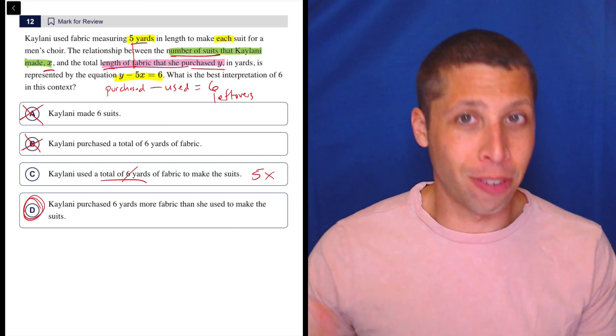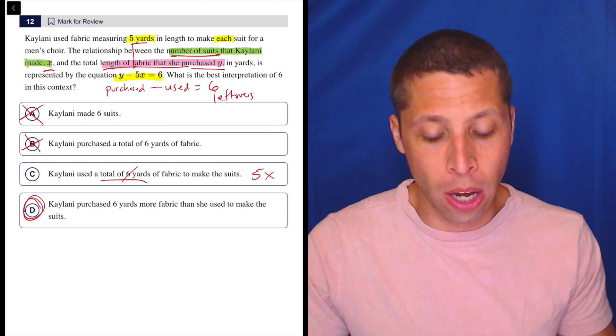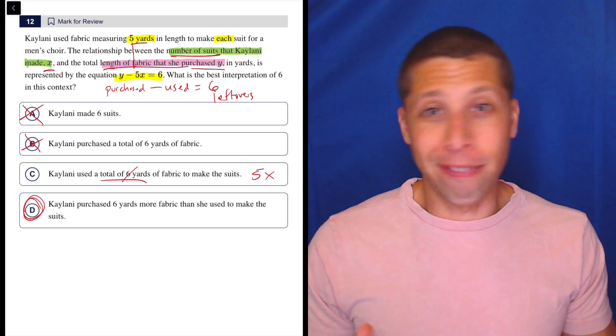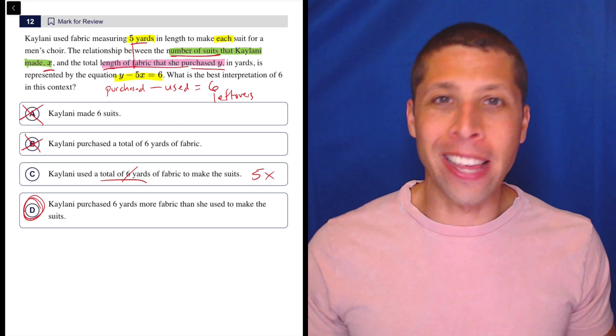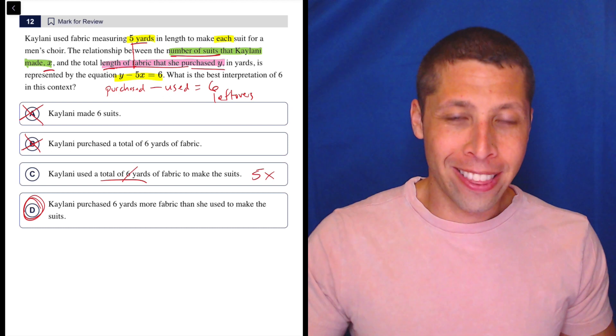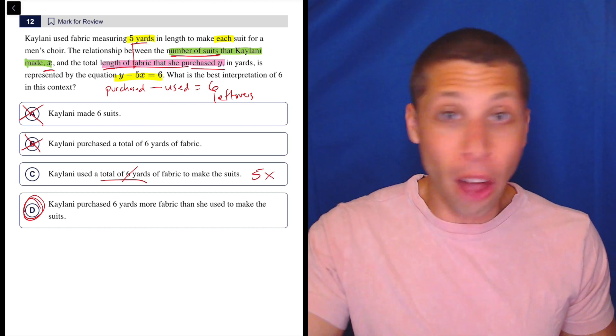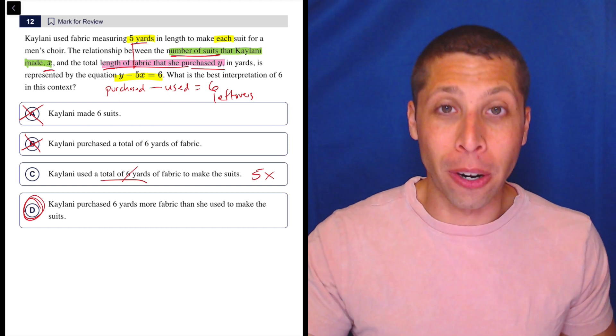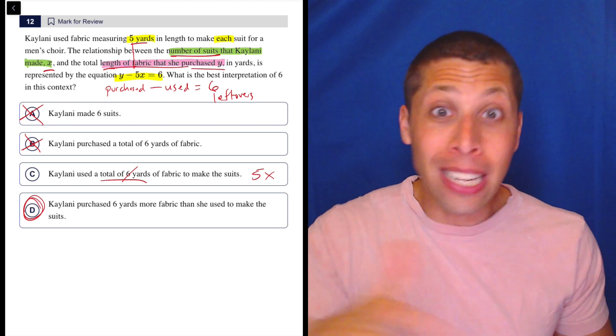They could have asked about that. I've seen other questions where that's the way they go, but it doesn't fit here. But regardless, A and B, they just told us in the story that those things are other variables, other numbers.